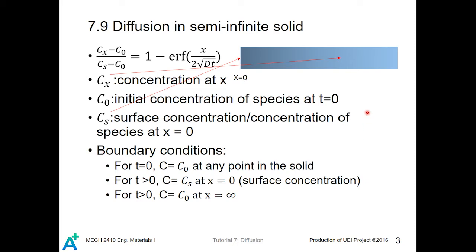Diffusion in a semi-infinite solid is the most useful solution to the partial differential equation mentioned. It is described by the equation: (Cx minus C0) over (Cs minus C0). Here, Cx is the concentration at point x, C0 is the initial concentration of species at time equal to zero, and Cs is the surface concentration at x equal to zero, at the boundary position.